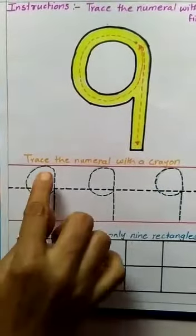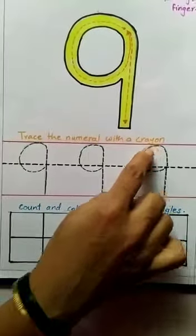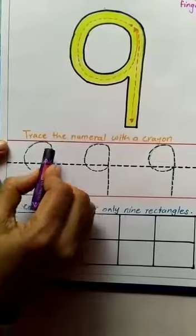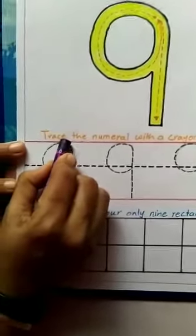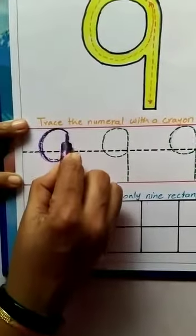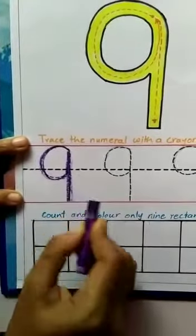Now trace the numeral with a crayon. Take the crayon and trace the numeral 9. See this way. Number 9.